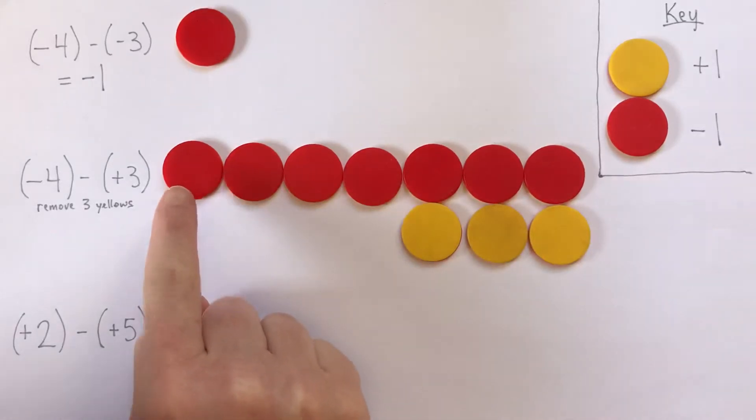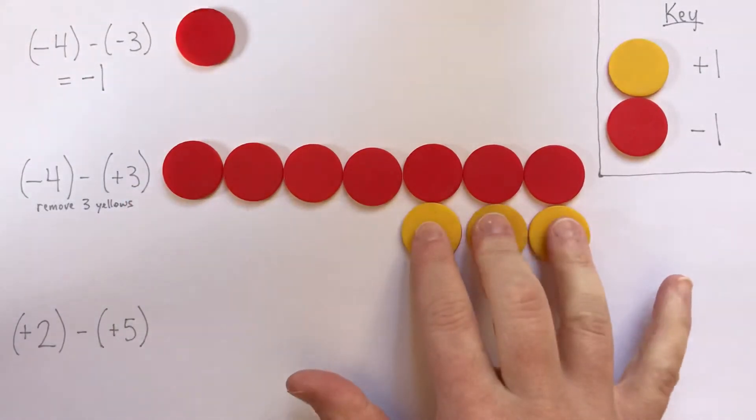And we're doing great now because we have negative 4 and we have 3 yellows in it. So we can remove our 3 yellows. This is negative 4 and now I'm going to do the subtraction. I'm going to take away my positive 3.